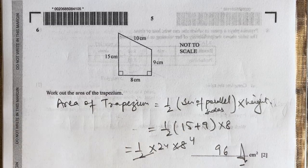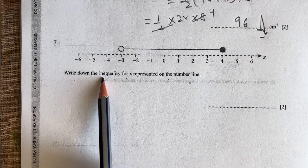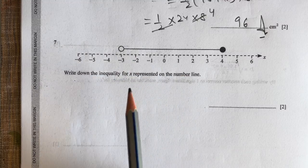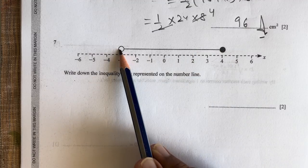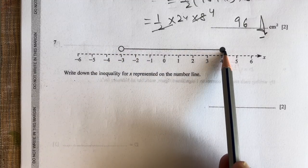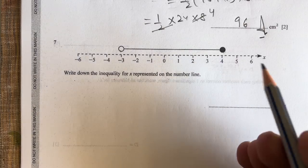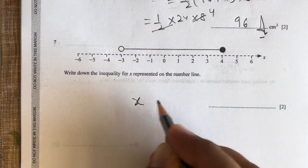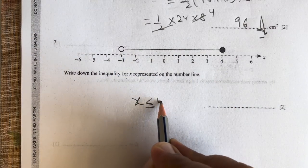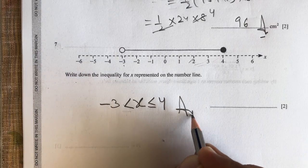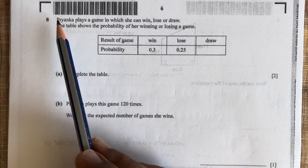Question number 7: Write down the inequality for x represented on the number line. This end is shaded and this is not shaded, so 4 is included and -3 is not included. So x ≤ 4 and x > -3. This will be our answer.